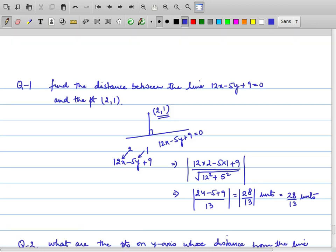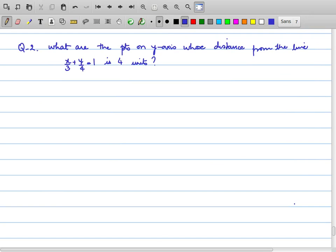We will take another question. What are the points on the y-axis whose distance from the line 3x+4y-1=4 is 4 units? Obviously again he is saying the distance. Distance simply means the perpendicular distance. Whenever nothing is said, distance means the perpendicular distance.